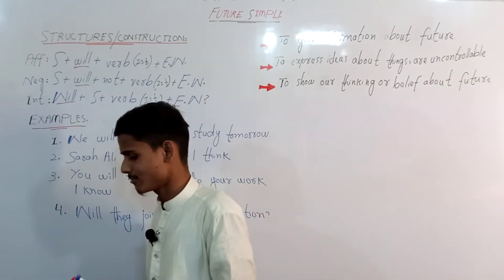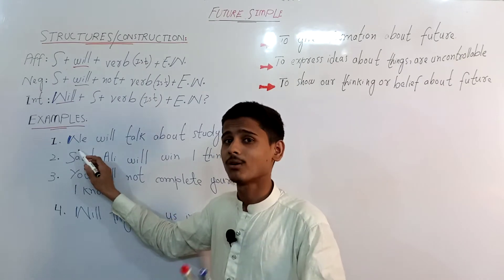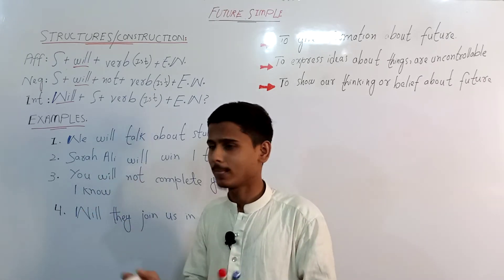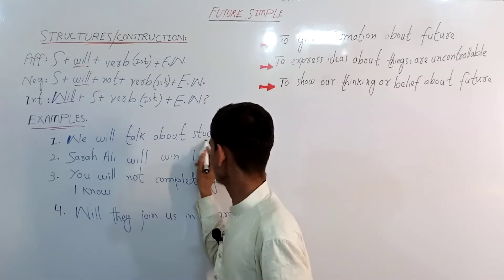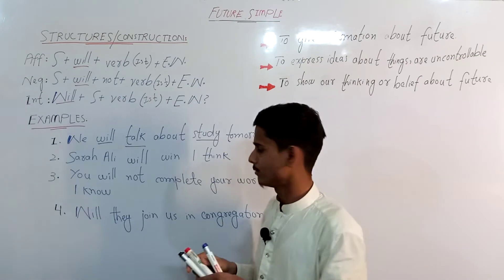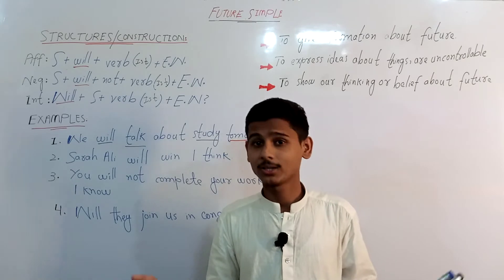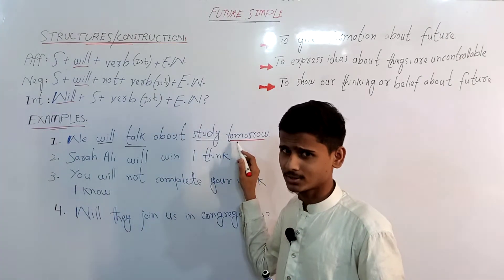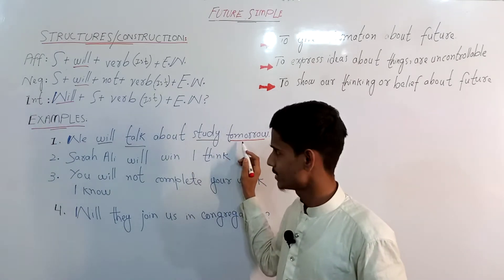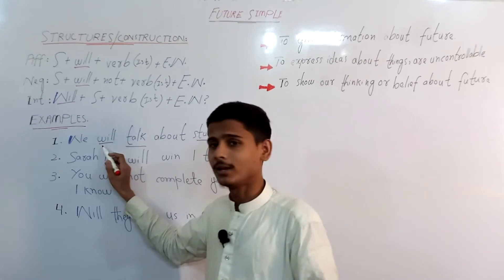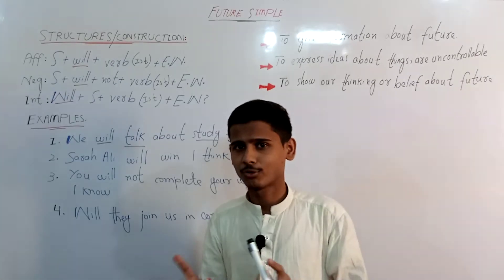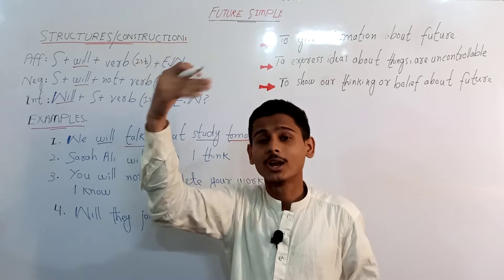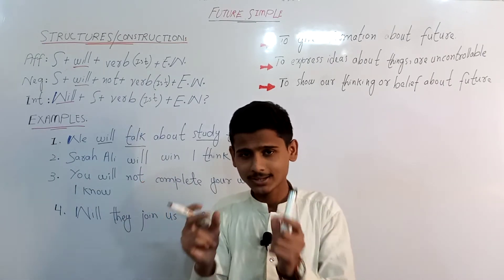Let's look at some example sentences. The first one: 'We will study tomorrow.' Note that 'we' plus 'will' is contracted as 'we'll'. 'Tomorrow' is an adverb of time referring to a future day, as I mentioned in the last part. So the full meaning is: we will hold a discussion about study on a future day — tomorrow — meaning an action will take place in the future.